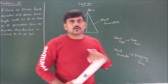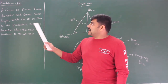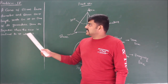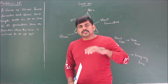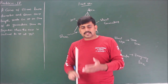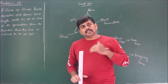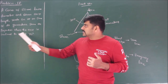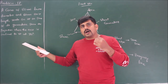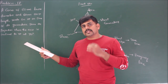Let us solve problem number 17. A cone of 50 mm base diameter and 60 mm axis length rests on HP on one of its generators. Draw its projection when the axis is inclined to VP at 30 degrees. Since it is a continuous sentence without using the words 'appears to be' or 'in the top view', this is a true inclination given for the true length of the axis. Make a note of it.